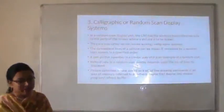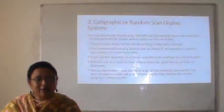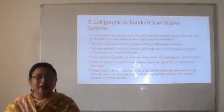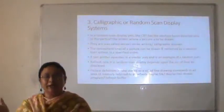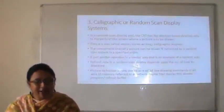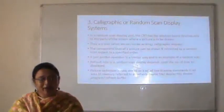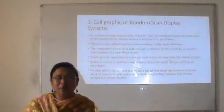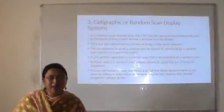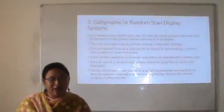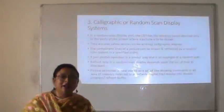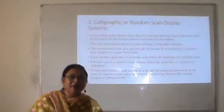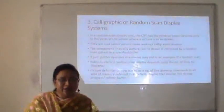The third display system is the vector or random scan display. In a random scan display, the CRT electron beam is directed only to the parts of the screen where a picture is to be drawn — unlike raster scan which scans the entire screen. These are also called vector, stroke-writing, or calligraphic displays. The component lines of the picture can be drawn and refreshed by a random scan system in a specified pattern. A pen on paper is an example of random scan — the pen draws only at the particular position needed.